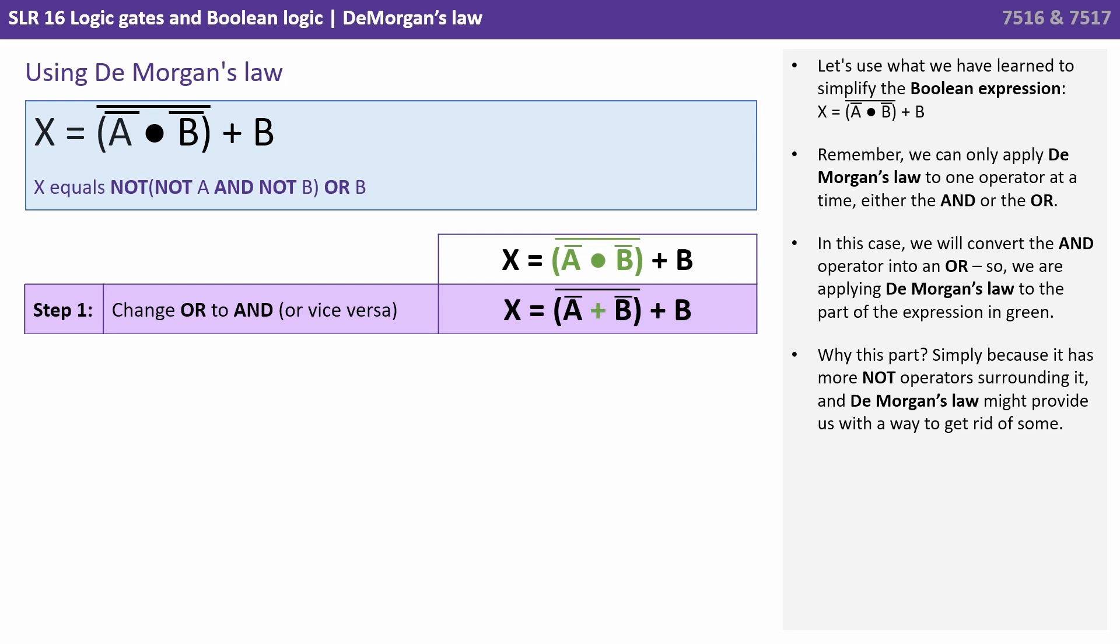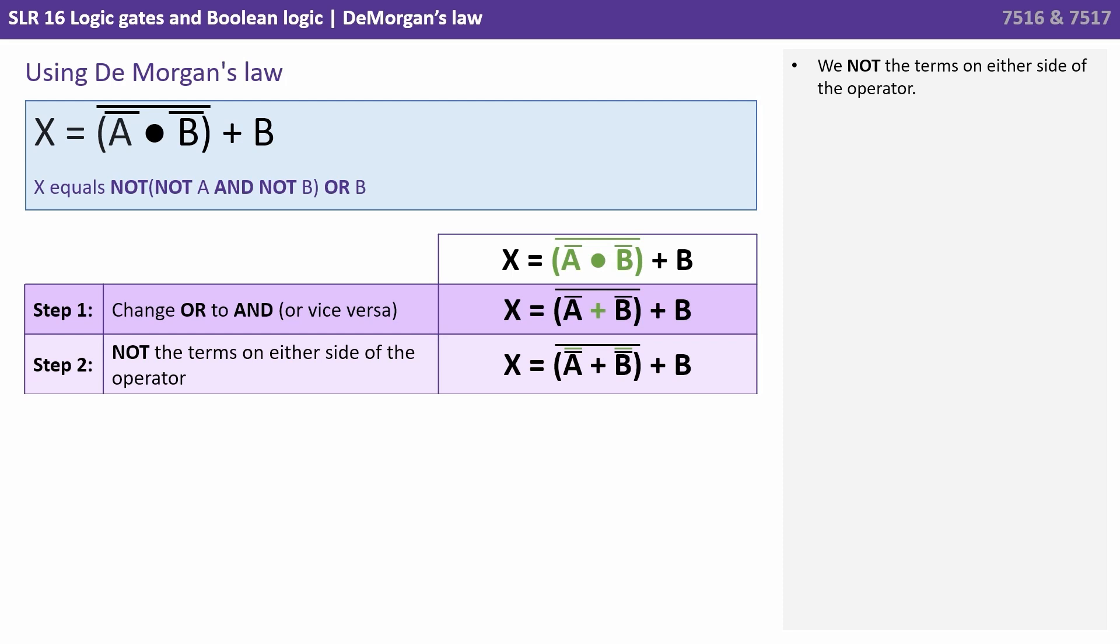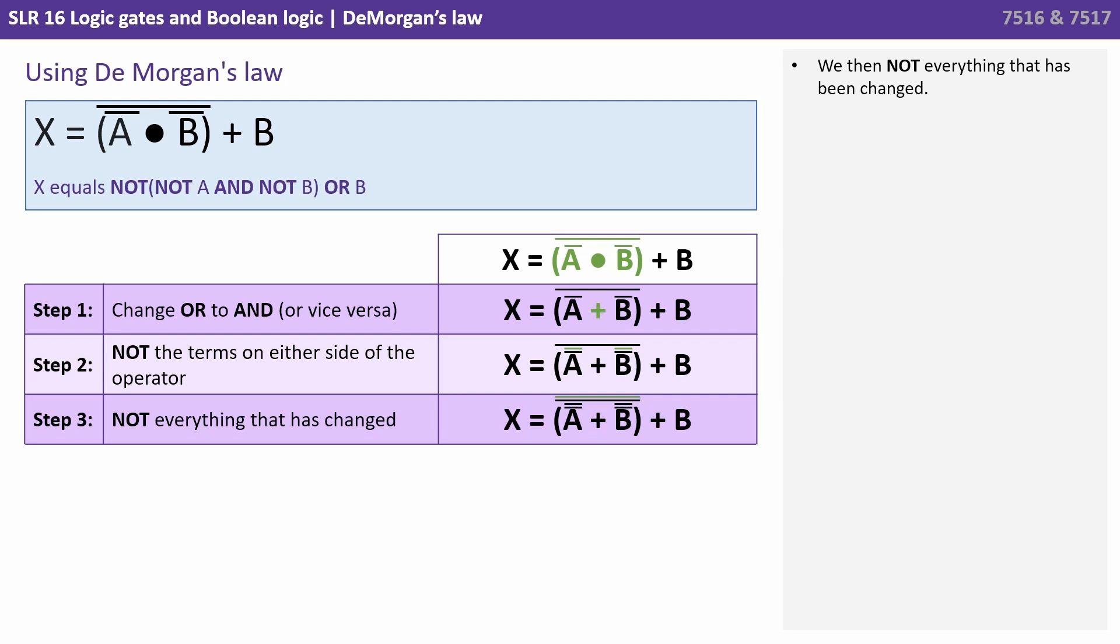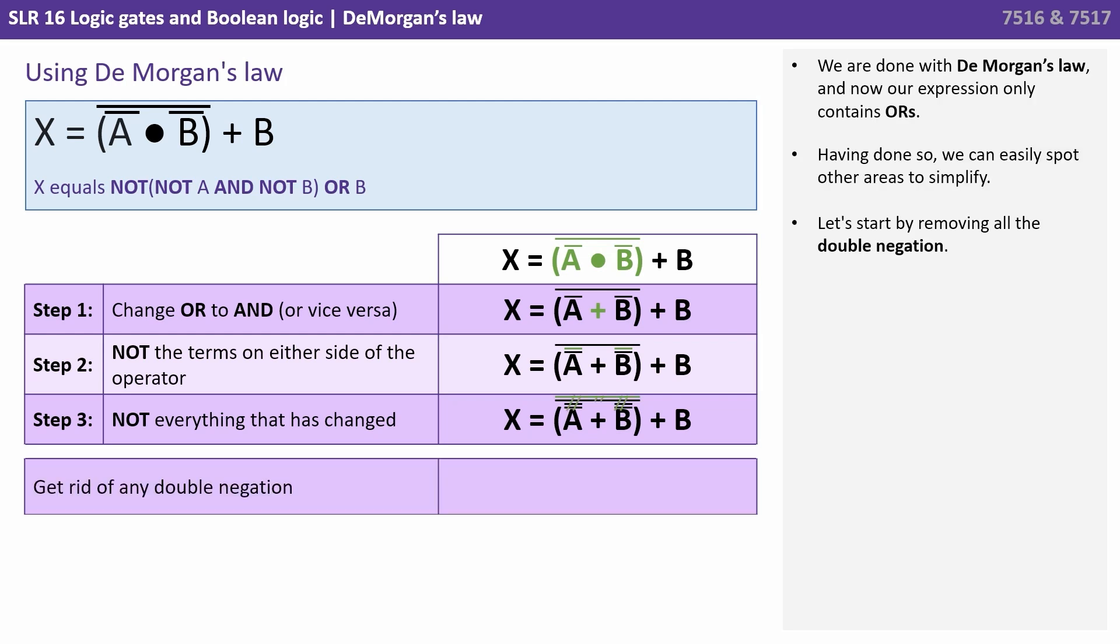Let's use what we've learned to simplify the following expression. So we've got X equals NOT, NOT A and NOT B, OR B. Remember, we can only apply De Morgan's Law to one operator at a time, either the AND or the OR. In this case, we'll convert the AND operator into an OR. So we're applying De Morgan's Law to the part of the expression shown here in green. Why this part? Well, simply because it has more NOT operators surrounding it, and De Morgan's Law might provide us with a way to get rid of some. We NOT the terms on either side of the operator. We then NOT everything that has been changed. We're done with De Morgan's Law and now our expressions only contain ORs.